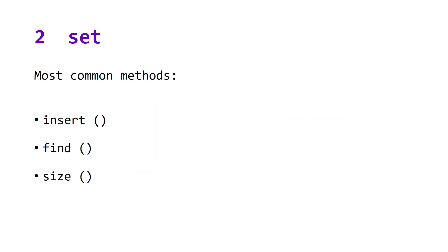Data structure two: set. Set is different from vector in that it stores its elements in sorted order and it does not contain duplicate elements. The three most common methods are insert, find, and size, and the runtime of these methods are log n, log n, and constant.